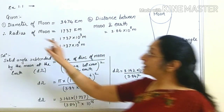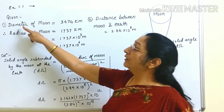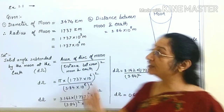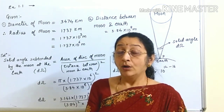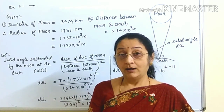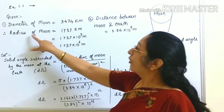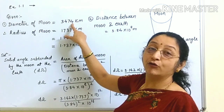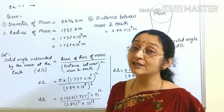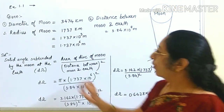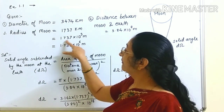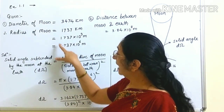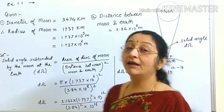First, write down the given information. The diameter of the moon is 3474 km. Since we require the radius in the formula, we divide by two: half of 3474 is 1737 km. So the radius of the moon is 1737 km.